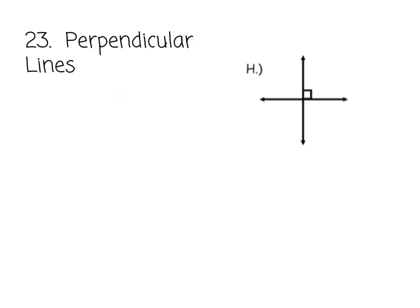Perpendicular lines. Perpendicular means that lines intersect and form a 90 degree angle. So with the lines intersecting, even just putting the right angle there, that tells us that those lines are perpendicular.